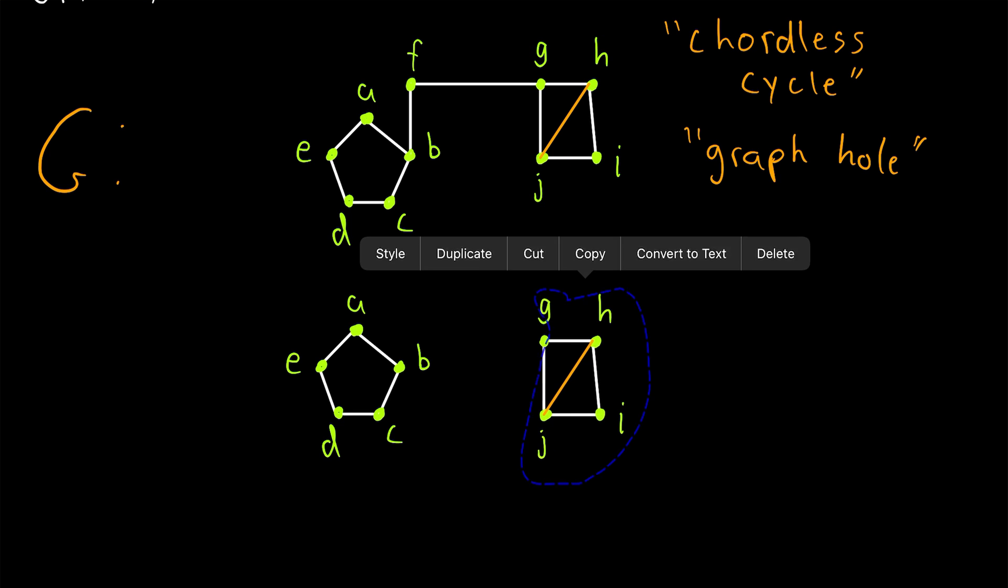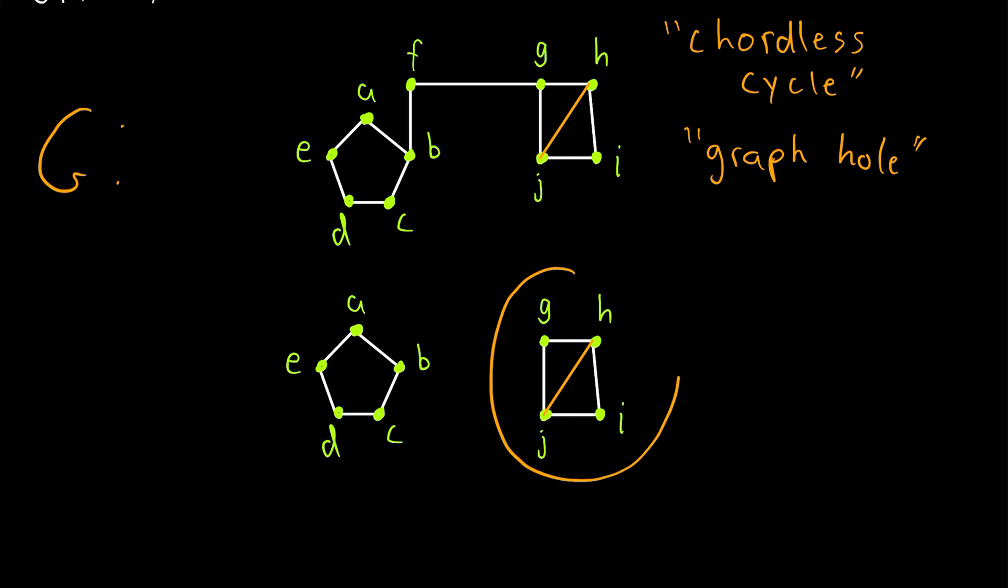The subgraph induced by the vertices of that cycle is this subgraph here, which we see is not a cycle graph, because it has that pesky chord in it.